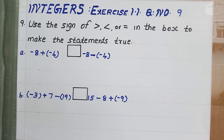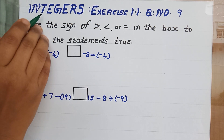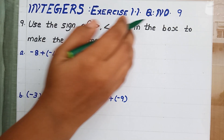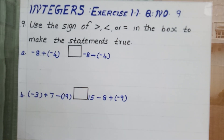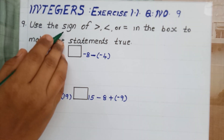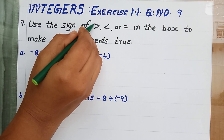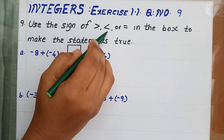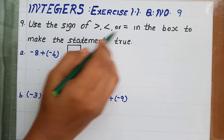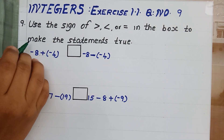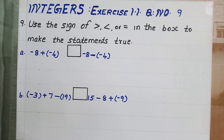Hello my dears. In the previous class we were discussing about the chapter Integers, Exercise 1.1. Today we can deal with question number 9. Question number 9 says to use the sign — greater than, less than, or equal to — in the box to make the statements true.